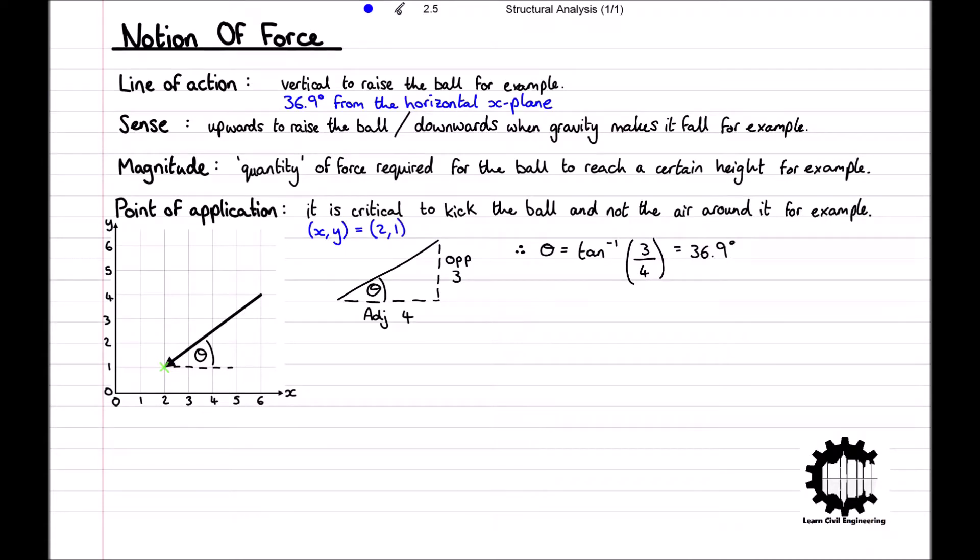The magnitude of the vector is equal to its length, and for this we can use Pythagoras' theorem where the length of the hypotenuse side of a triangle is equal to the square root of the opposite side squared plus the adjacent side squared. For us then, the magnitude is equal to the square root of 3 squared plus 4 squared, which is equal to 5. So we can say that the magnitude of the vector is equal to 5.